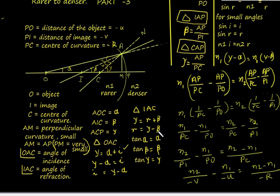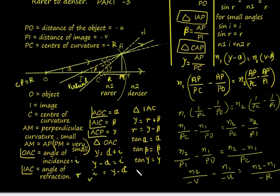We need the tan values of angles alpha, beta, and gamma. For small angles, tan alpha equals alpha, tan beta equals beta, and tan gamma equals gamma, because the angles are small.